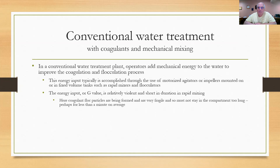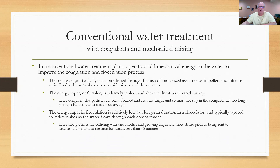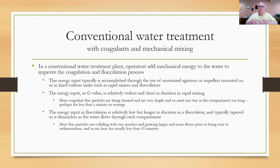In rapid mixing, we're trying to create the floc particles from scratch by adding the coagulant, making sure it gets dispersed into all corners of the unit so that every drop of water gets its share of coagulant. We don't want to be in there too long — on average we're going to be in there less than a minute or so. The energy input in flocculation is relatively low but longer in duration, and typically it's tapered as we move through the unit. At the beginning it's a little higher energy; by the time we work through to the end of the flocculator it's lower energy. Here we're trying to provide opportunities for the floc particles to collide with one another and stick together.